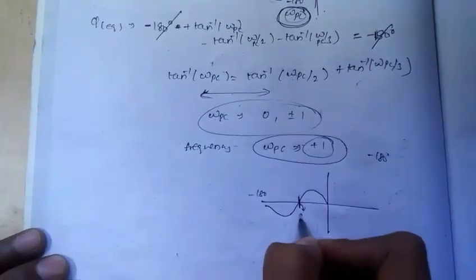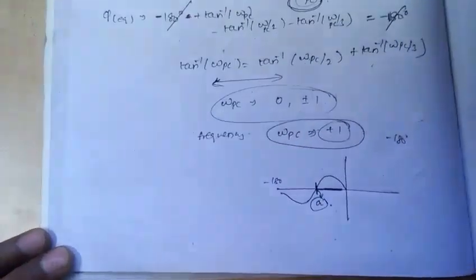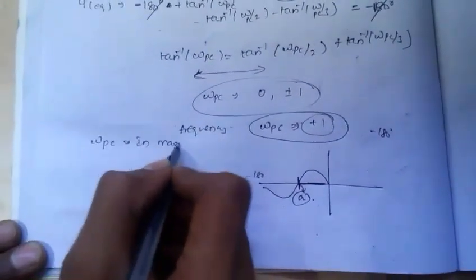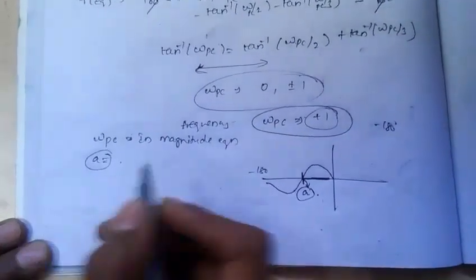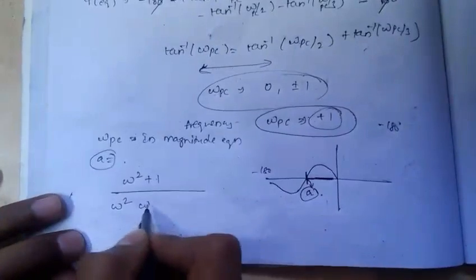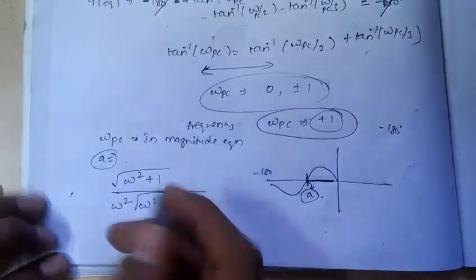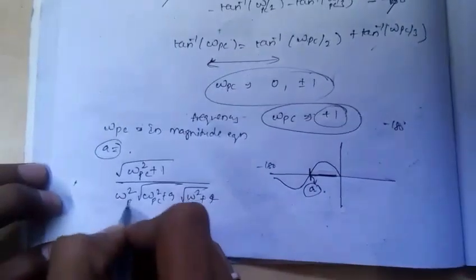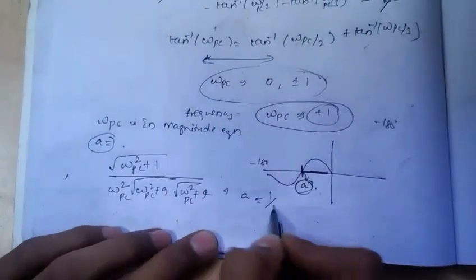We are unknown of the magnitude at which the curve is crossing minus 180. We don't know this point value — let us assume it is A. Since this is magnitude, we have to substitute the Omega PC value in the magnitude equation. The magnitude equation is: square root of (Omega squared plus 1) times Omega, divided by square root of (Omega squared plus 9) times square root of (Omega squared plus 4). Substituting Omega PC gives A, and for this problem we get it as 1 by 5.